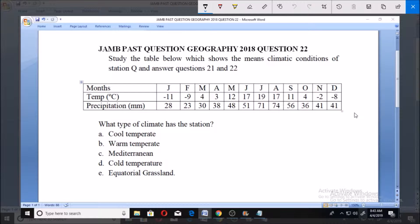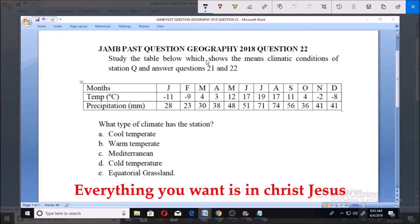Welcome, let's look at this JAMB Past Question Geography 2018 Question Number 22. Study the table below which shows the main climatic conditions of station Q and answer questions 21 and 22. Now this is the table.